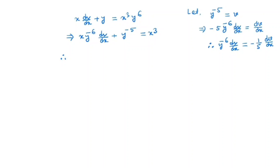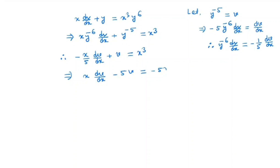Substituting back, we have x times (minus 1/5) dv/dx minus v equals minus 5 x cubed after multiplying through. To get the standard form, we divide this equation by x. So we have dv/dx minus 5 over x times v is equal to minus 5 x squared.